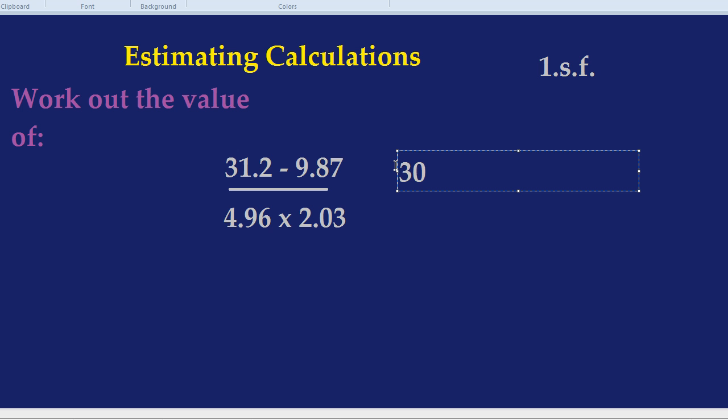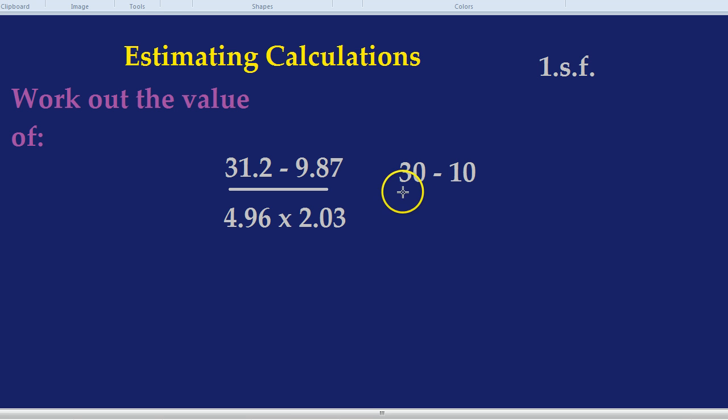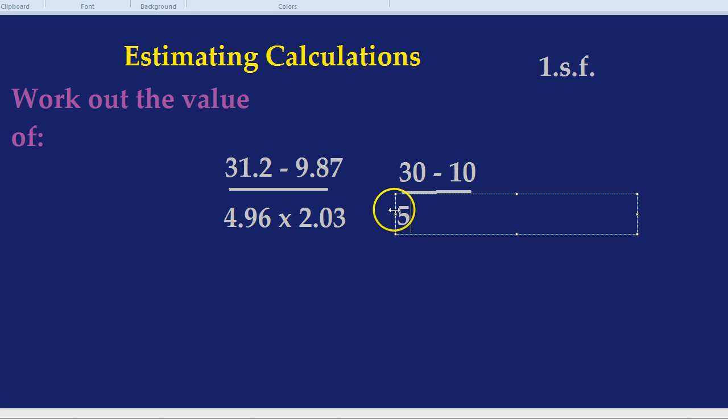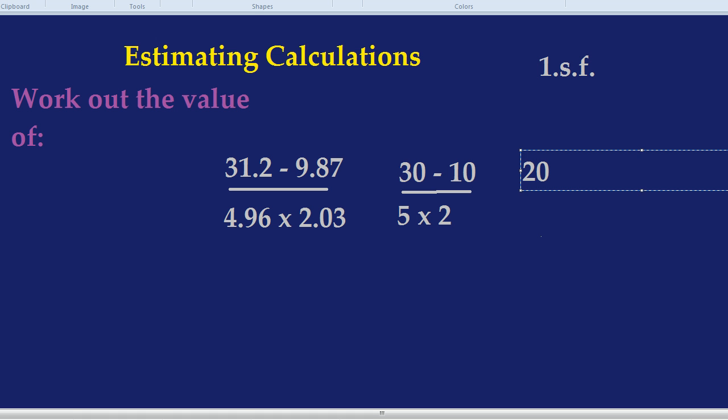Notice there's only one number that's not a zero. So 30 take away the 9.87 rounds to 10 because it's closer to 10 than to 9. What does the bottom line become? 4.96 would round to 5 and 2.03 rounds to 2. Let's work those out.